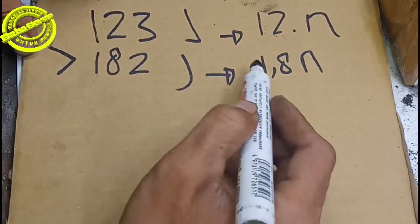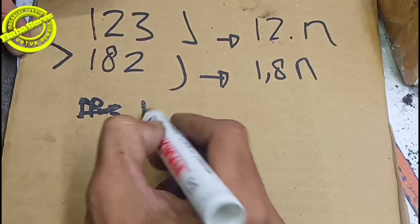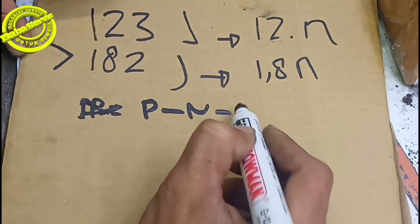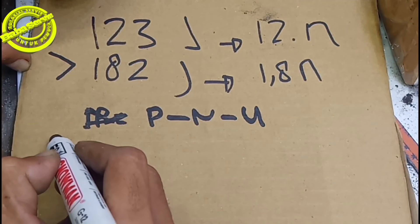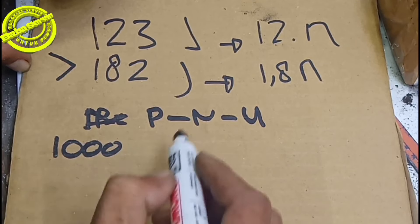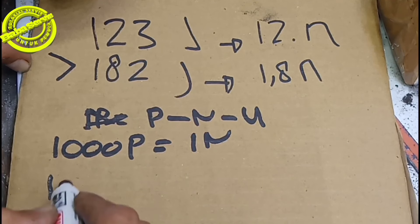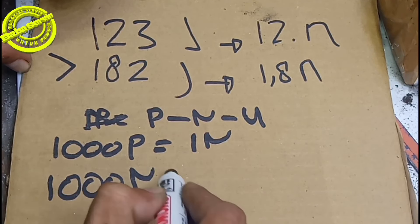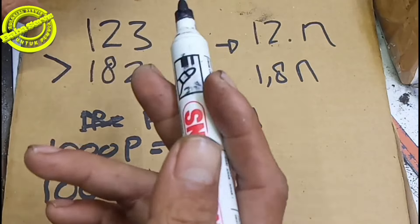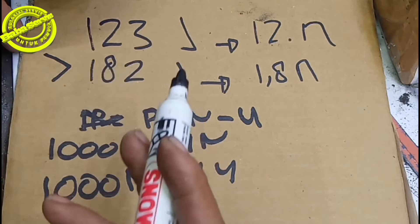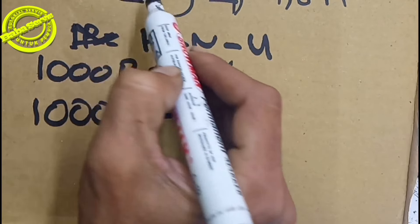Kita singkatkan dulu. Awal pertama adalah Pico, setelah Pico adalah Nano, setelah Nano adalah Mikro. Seribu Pico sama dengan satu Nano, dan seribu Nano sama dengan satu Mikro. Jadi bagaimana cara membacanya?